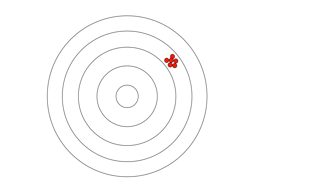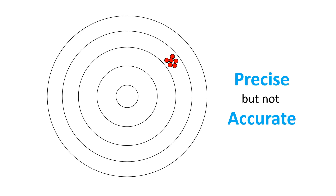On another attempt at the target, all of my shots were very close together but not on the bullseye. I would say my shooting is precise but not accurate. It's precise in that my results are all very close together — that's high precision — but it's not accurate. What might have caused this? Maybe my sights weren't adjusted properly. My technique was good but my sights being misaligned caused me to shoot precisely but not accurately.